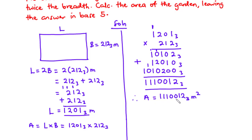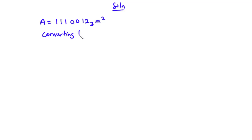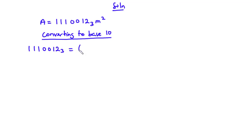The area in base 3 is 1110012 base 3 meter square. We are asked to leave our answer in base 5. To convert to base 5, we first convert this value to base 10, and then convert from base 10 to base 5. So the area is 1110012 base 3 meter square, and we need to convert this to base 10.